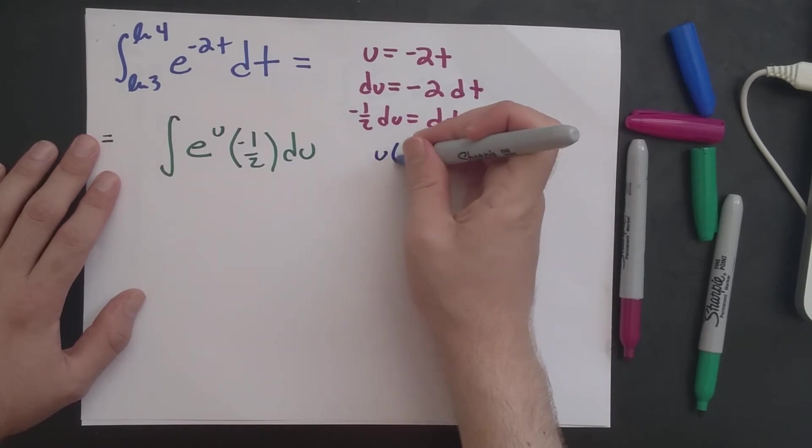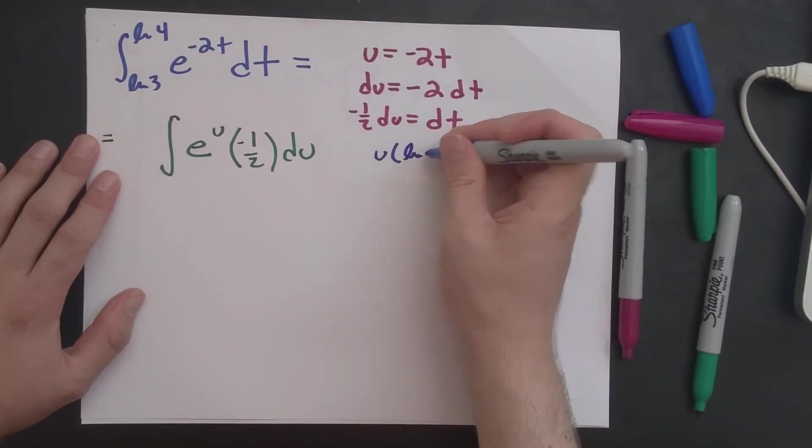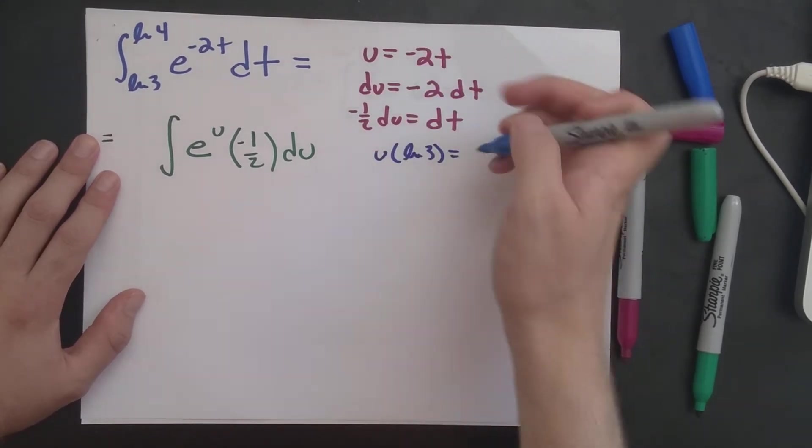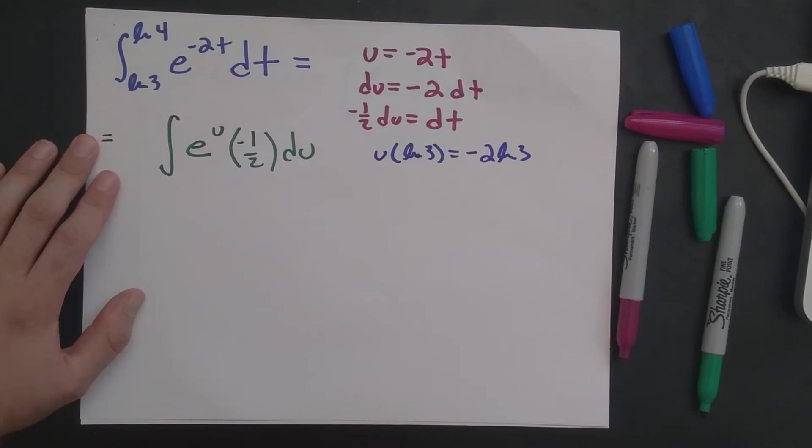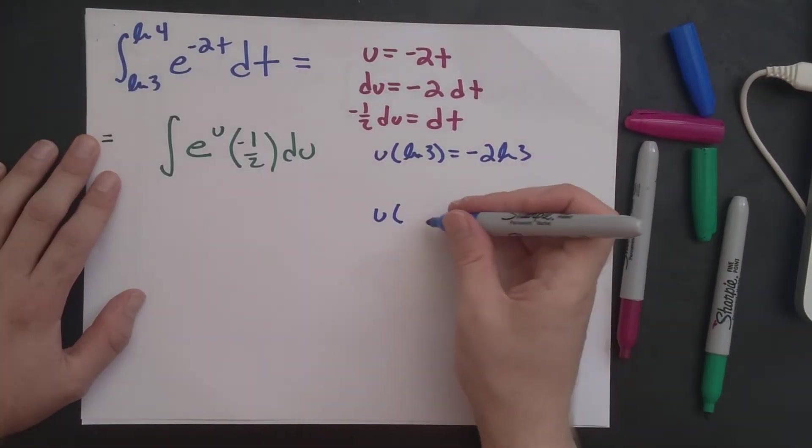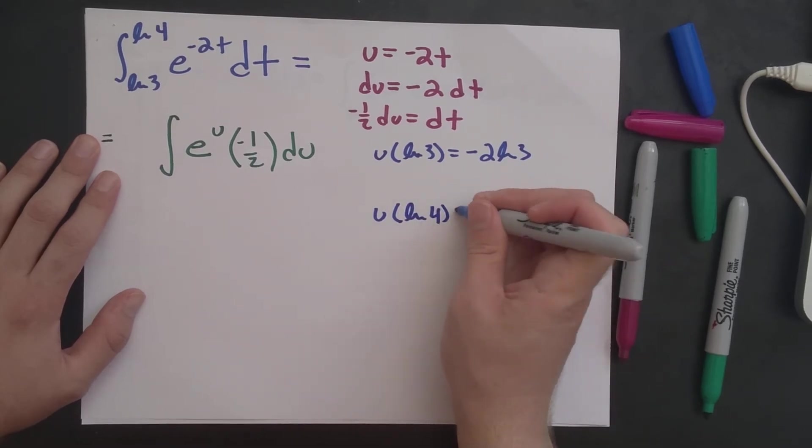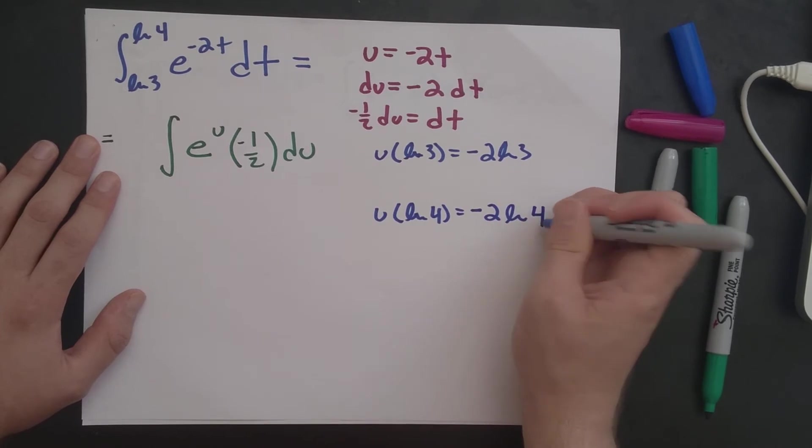And we have to change the bounds. So when t is equal to natural log of 3, u of natural log of 3, plug in up here, is minus 2 times natural log of 3. And when t is natural log of 4, u of natural log of 4 is equal to minus 2 times natural log of 4.